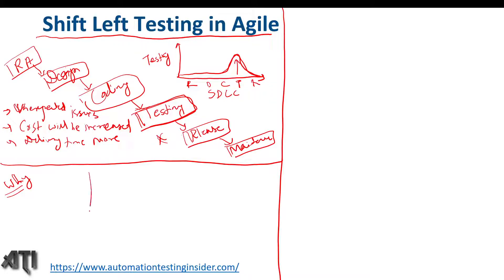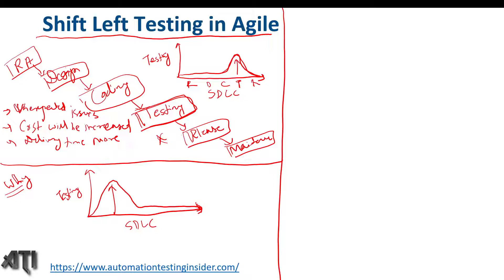Let me draw a diagram. We have testing on one axis and the software development life cycle on the other. We put the testing effort as early as possible, so later on we need to do less testing effort at the later stage of the SDLC, since we have already put so much effort at the beginning and found and fixed so many defects during that phase. This is the biggest advantage of shift left testing.